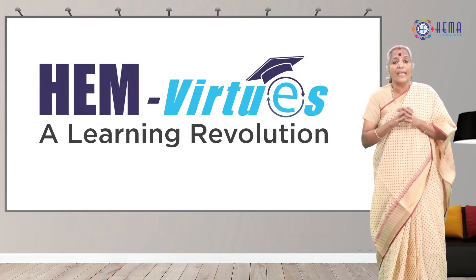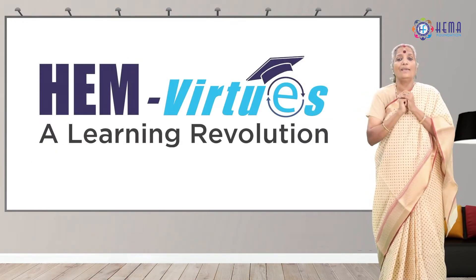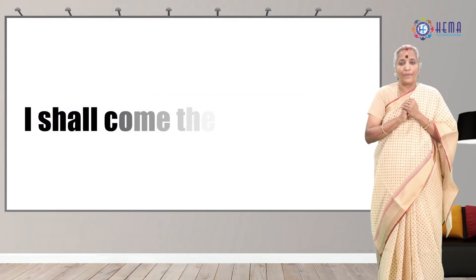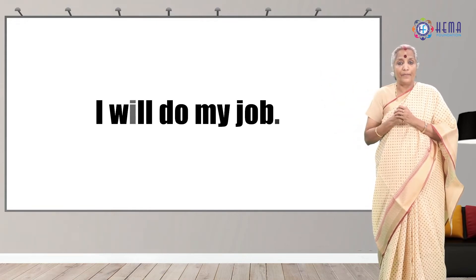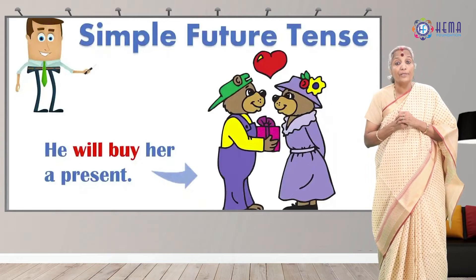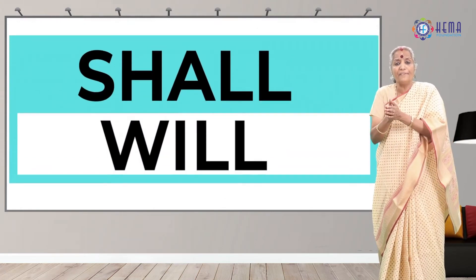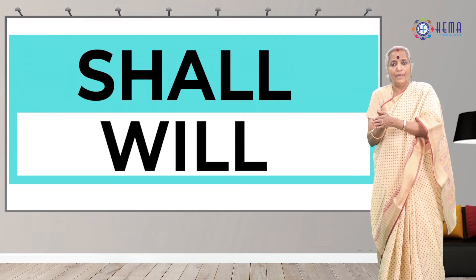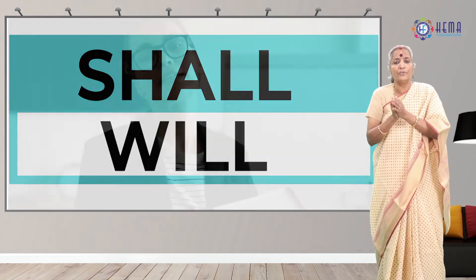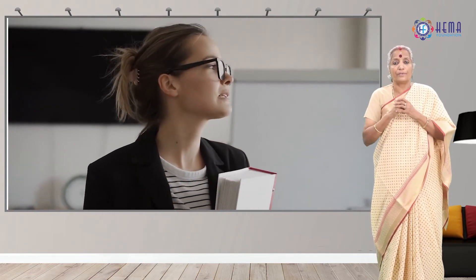For the future tense, we need to use 'will' or 'shall.' For example: 'I shall come there tomorrow' and 'I will do my job.' These are classified as future sentences or future tenses. Since future tense is something we cannot claim much ownership of, 'shall' and 'will' have greater emphasis to exert. The strength of a sentence depends on the verb used, because the future action is possible or not, and these verbs help the sentences to convey that.